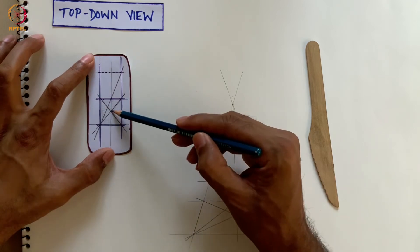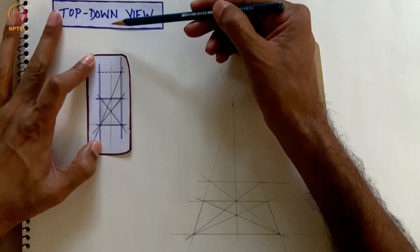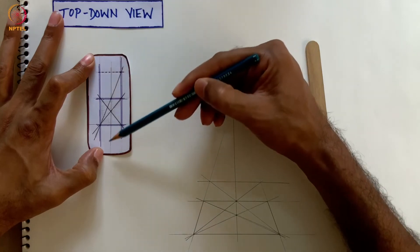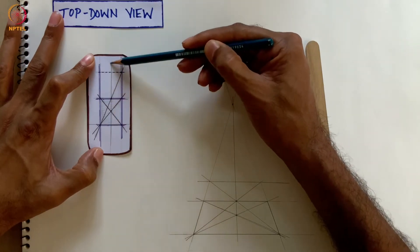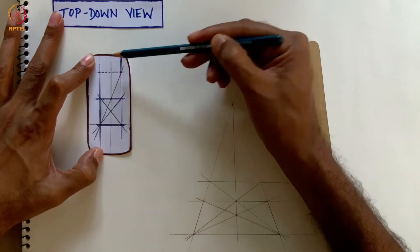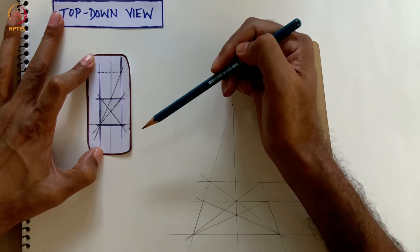We next did something interesting, which is impossible in the top-down view. We used the straight edge to join the center point to the vanishing point, which in the top-down view lies off at infinity.